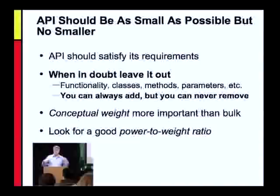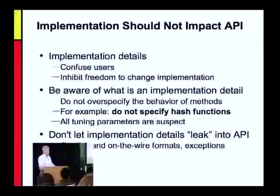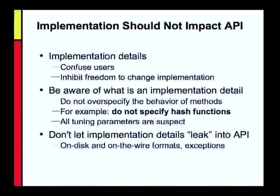The implementation shouldn't impact the API. Don't put any implementation details into the API — they confuse users and inhibit the implementer's freedom to change the API later. For example, if you have an API about phone numbers but it throws SQLExceptions, and then you want to re-implement it on a proprietary data store rather than SQL, your clients are already catching SQLExceptions. The exceptions you throw should be at the same layer of abstraction as the rest of the API. That's just one example where implementation details leak into APIs.